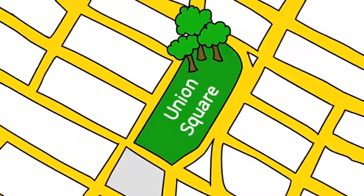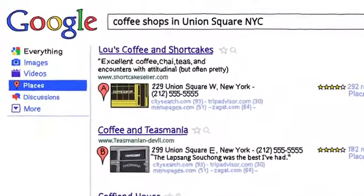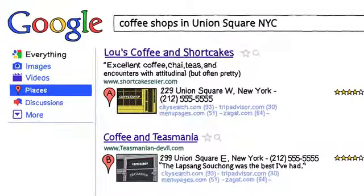Say you're in Union Square in New York City and want to find a nearby coffee shop. So you go to Google and type in coffee shops in Union Square in New York City. You'll find a list of local coffee shops near Union Square,